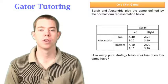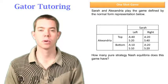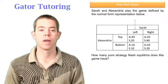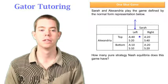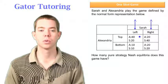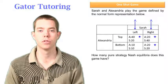Well, again, we want to solve this thinking from the other person's point of view. So if Sarah were to move left, Alexandria would rather have 40 than 10, and if Sarah were to move right, Alexandria is indifferent between 20 and 20, so we can star both of those.